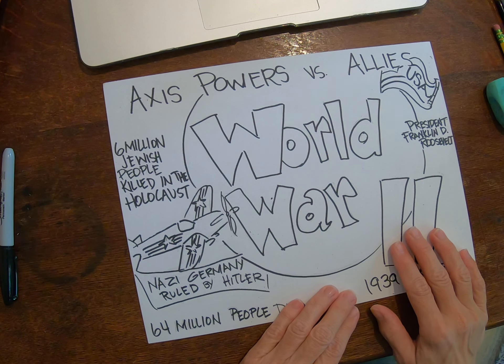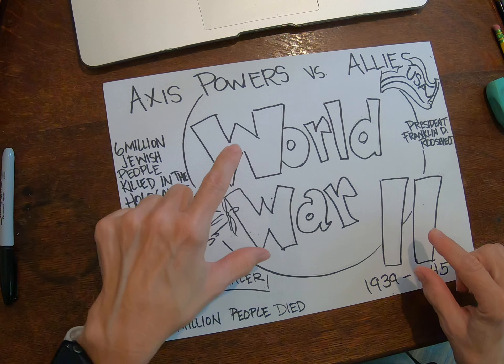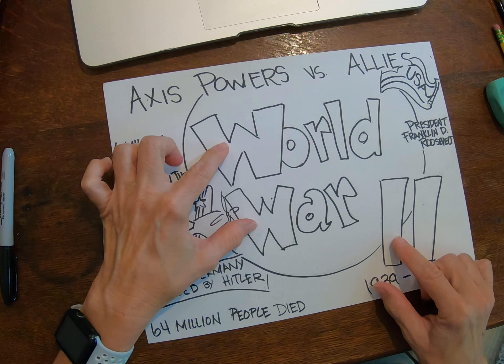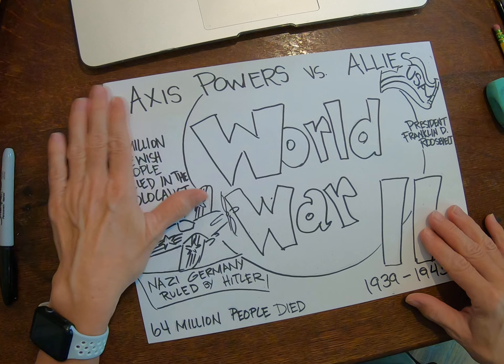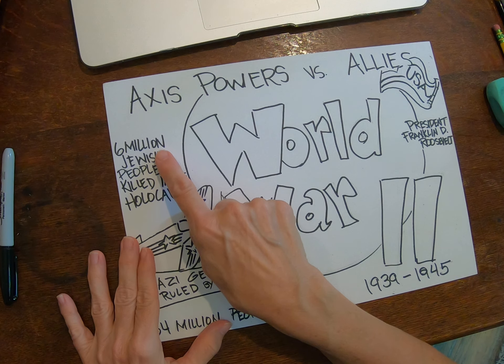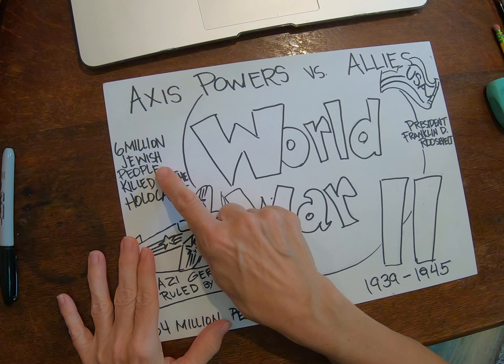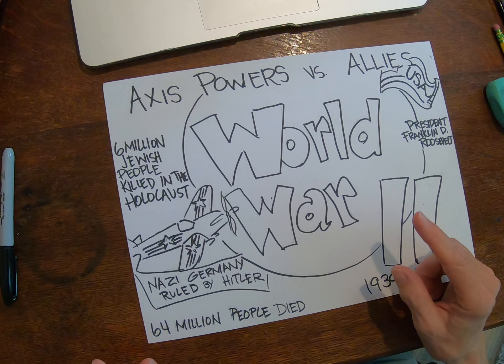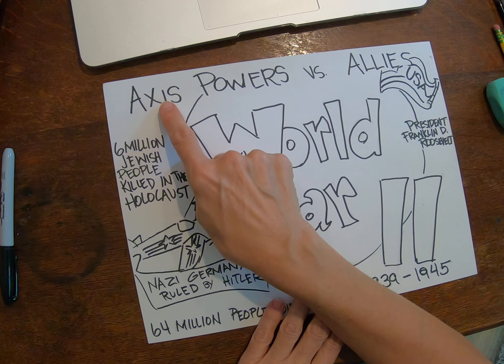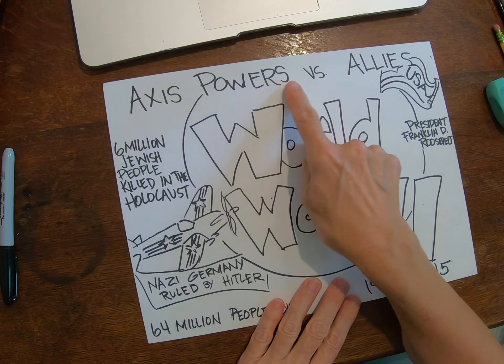I have 'World War II' written in graffiti letters. That's the only graffiti lettering you have to do — just your main subject area — because that draws attention to it. Then you can print neatly using neat handwriting and correct spelling for your facts. I put 'Axis Powers versus the Allies' because those were the two groups of countries fighting each other during World War II.